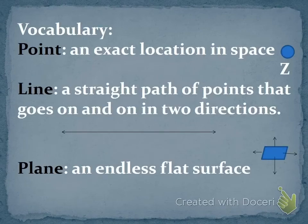So the first vocabulary word we are looking at is a point. A point is an exact location in space. It can be located anywhere, and we usually label them with some letter, typically a letter and not a number.